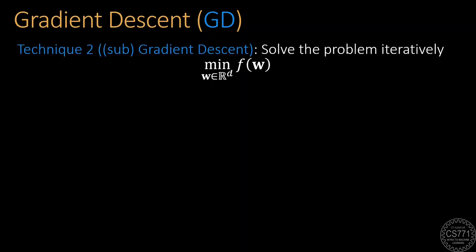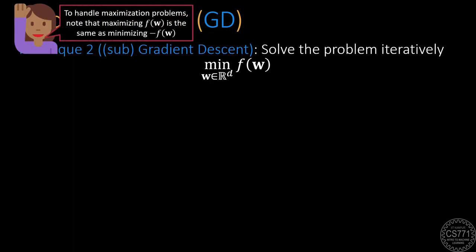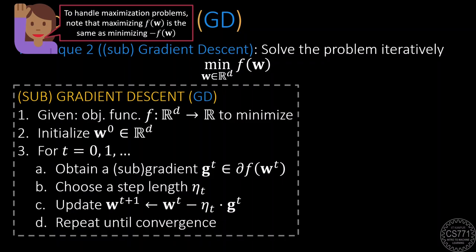To apply this technique to minimize a function f, we initialize the function at some point and in each iteration, we compute the gradient at our current point and then move a tiny bit opposite to direction of the gradient to change the current point. This is repeated until we converge. If we are dealing with non-differentiable objectives, we can always use sub-gradients in place of gradients.